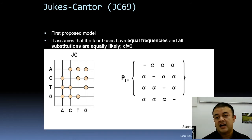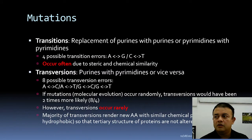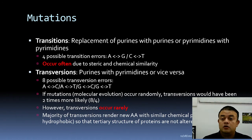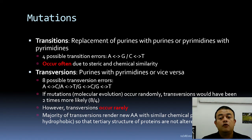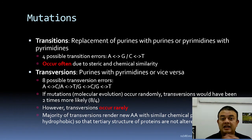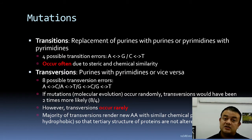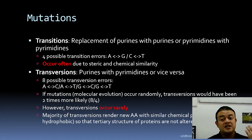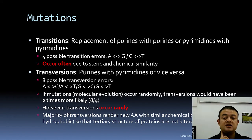Transitions and transversions differ in nature. There are only four possible transition events, while transversions number eight, so if completely random, transversions would be more likely. However, transversions tend to lead to non-synonymous substitutions with grave consequences, which is why in nature transitions are much more likely than transversions — transversions are rare.